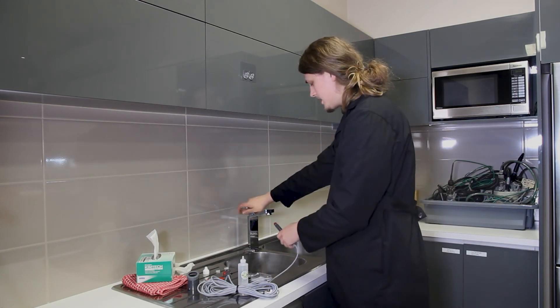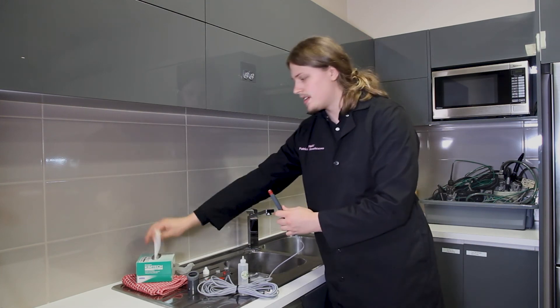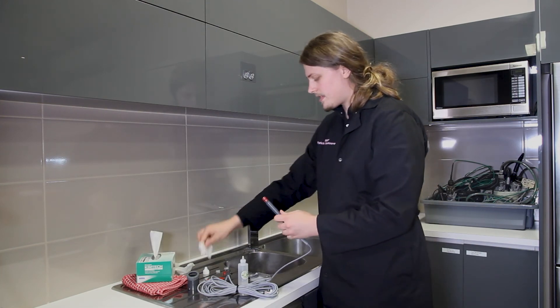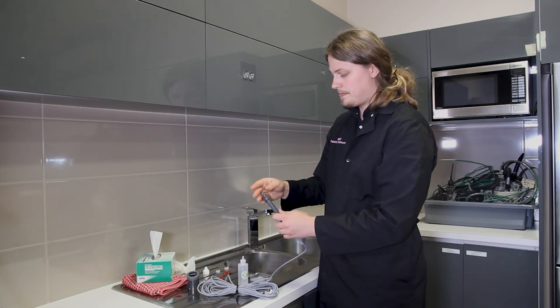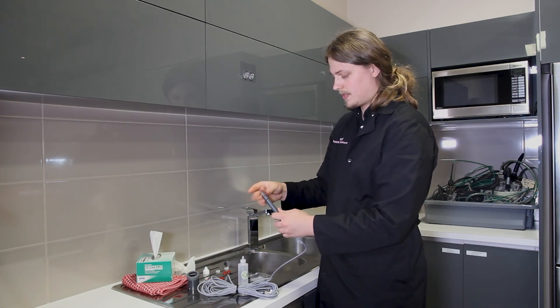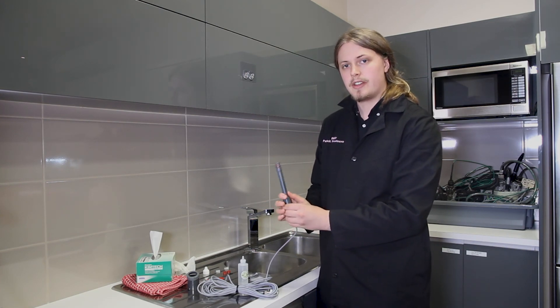Finally, give your sensor tip a wash under water, dry it off, and screw on the sensor cap. And there you go—that's how you replace the membrane on a DO sensor.